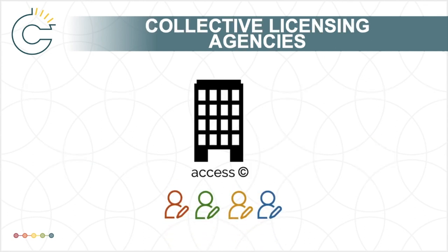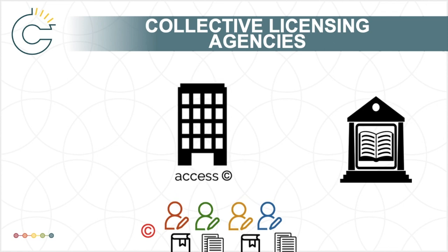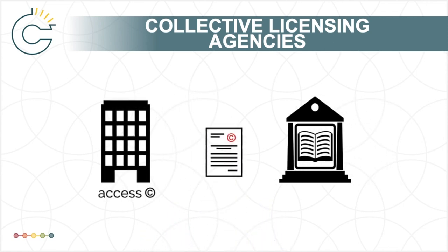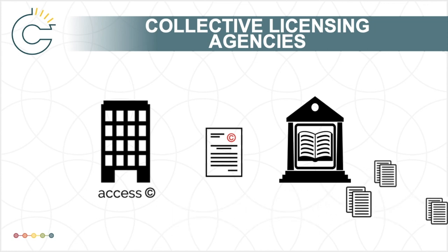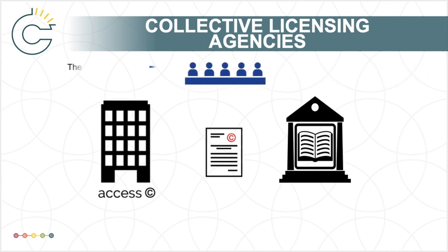Authors and copyright owners can choose to have licenses to their works managed by collective licensing agencies, like Access Copyright, which manages the copying of works in its repertoire. Educational institutions can choose to enter into agreements with collectives like Access Copyright to cover routine copying of those works according to formulas agreed on by both parties. When disagreements arise around licensing terms, the collective can apply to the Copyright Board to address the situation with a tariff.